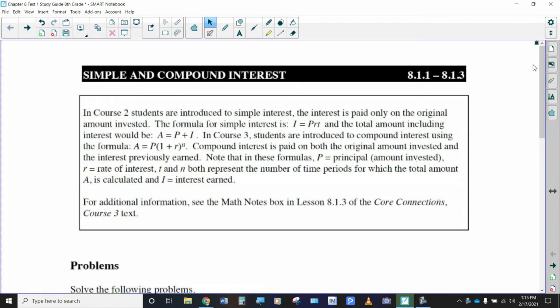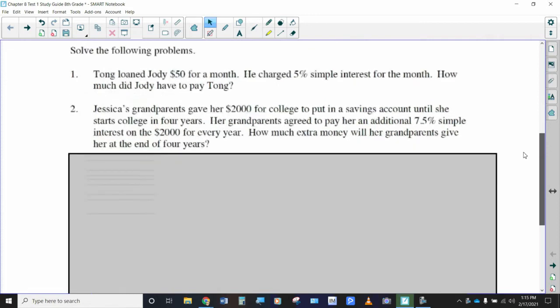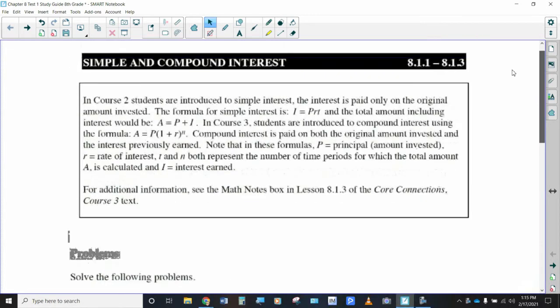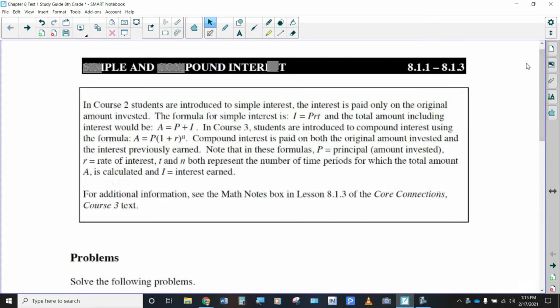So here we've got, I think, a total of 10 problems in this study guide, and I think the first half, like the first five of them are simple interest, and then the last five are compound interest. So I'm going to do a couple each to get you started, and then that should give you plenty of time to practice with the other ones. Or maybe I'll just do one each so you can do like four of each kind just to make sure that you're understanding things.